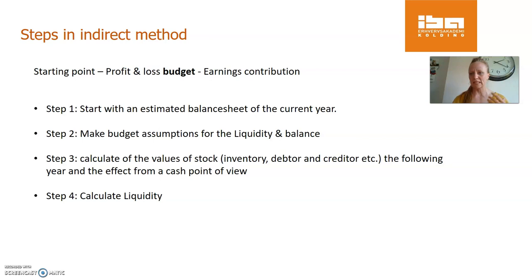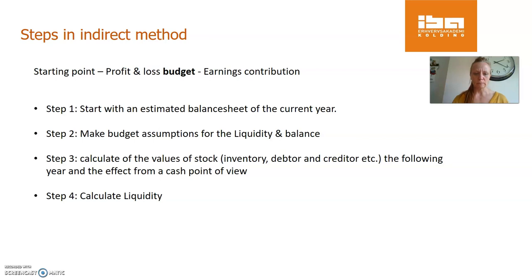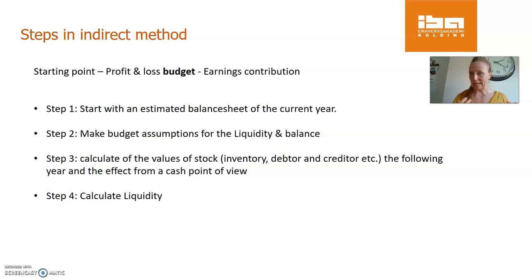They set these assumptions, then calculate the values of the accounts where capital is tied up — stock inventory, accounts receivable, and creditors. For the following year, they calculate the effect from a cash point of view of those end results. If you increase the value of stock, that is negative from a cash point of view because you have tied up capital. Similarly, tying up capital in accounts receivable is also negative. On the other side, if you are allowed to increase your debt to suppliers, that is positive for cash flow — you get to keep your cash instead of paying off debt. Then all in-between calculations are done to find the liquidity for the year.